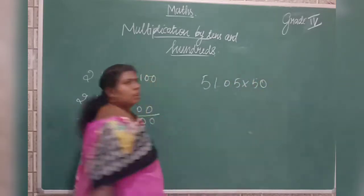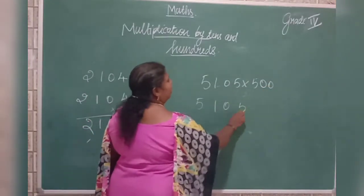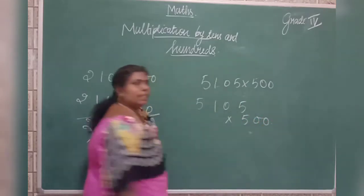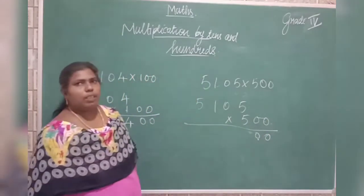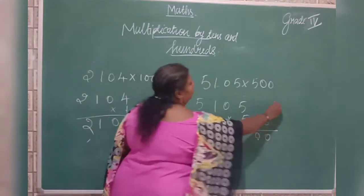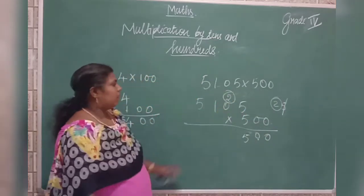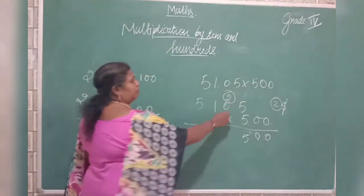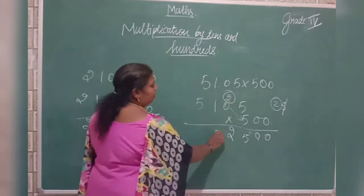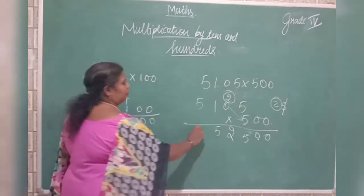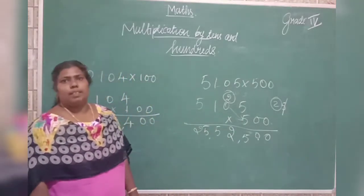Now: 5,105 into 500. Write the two zeros. Then use the fourth table. 5×5 is 25 — write 5, carry 2. 5×0 is 0, plus 2 is 2. 5×1 is 5. 5×5 is 25 again. The answer is 2,552,500.